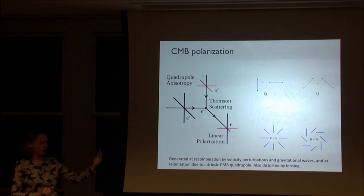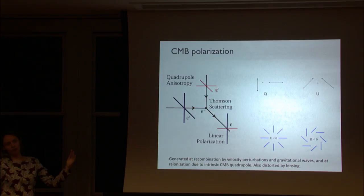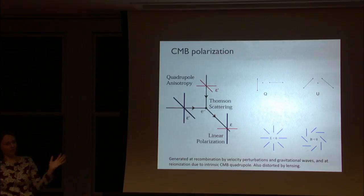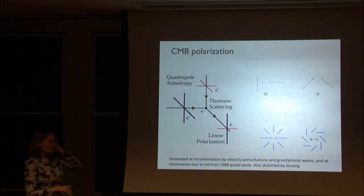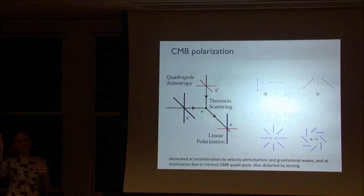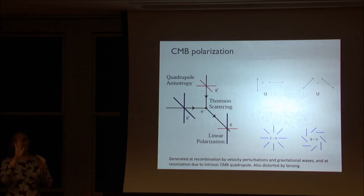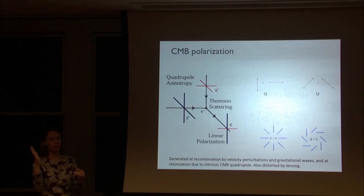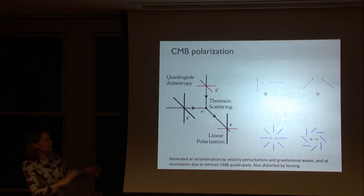Polarization is also generated when the universe re-ionizes, since you again have free electrons and the CMB itself scatters off them. Additionally, CMB light gets distorted by gravitational lensing around large-scale structure, which shifts the position angle of the polarized light — that's the lensing signal.